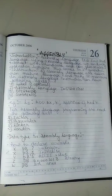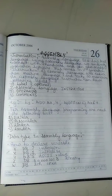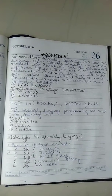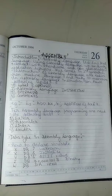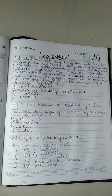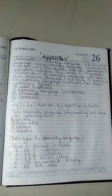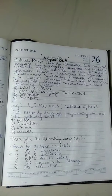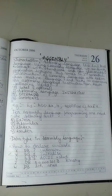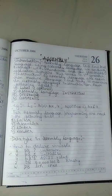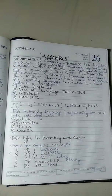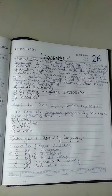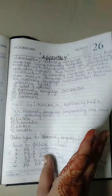Now these are the data types in assembly language and how to declare a variable. For example, X DB ? means the variable is unknown. X DB 5 is for initialization. Y DB '5' is a sky value. Z DB with a binary number is binary. W DB 31h is hexadecimal.